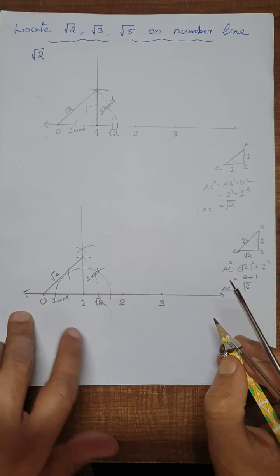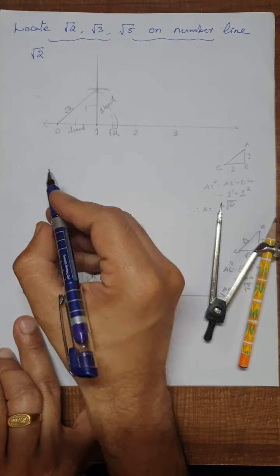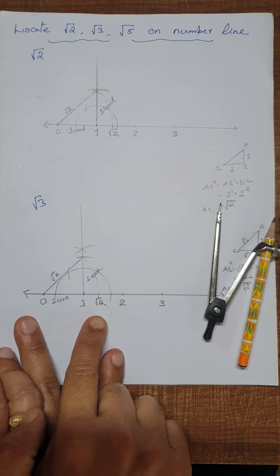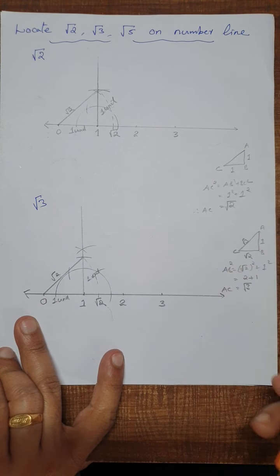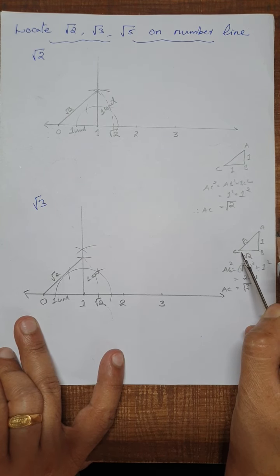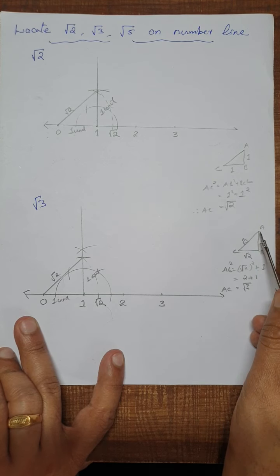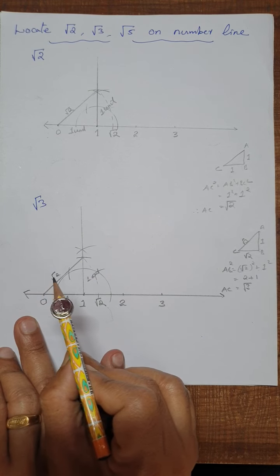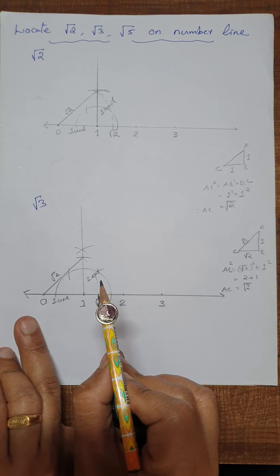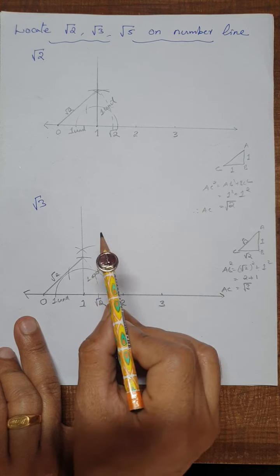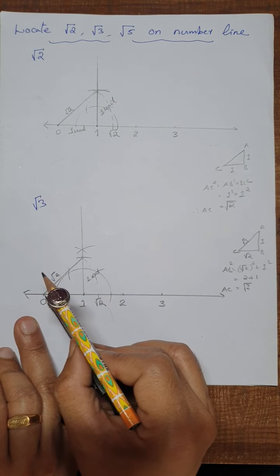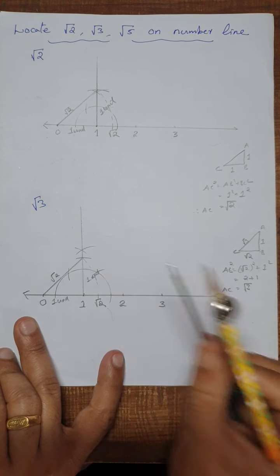Now we have located root 2 on the number line. Our goal is to locate root 3. We need to construct a right triangle whose base is root 2 units and height one unit. We draw a perpendicular at root 2, and the hypotenuse of that new triangle will be root 3 units.